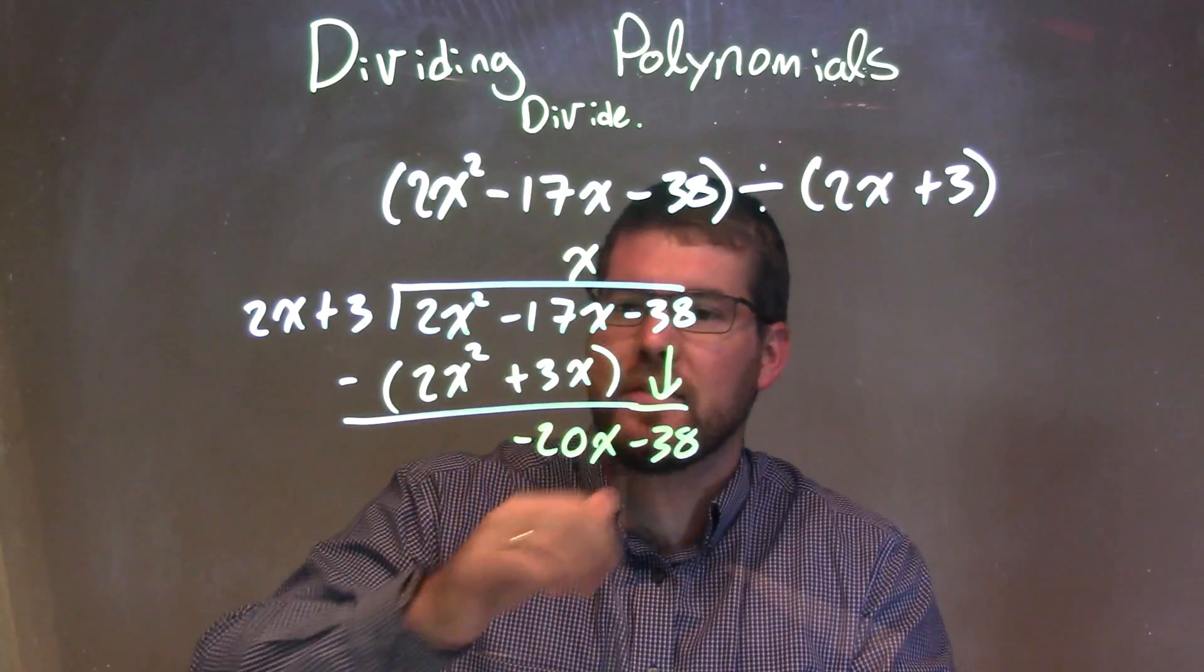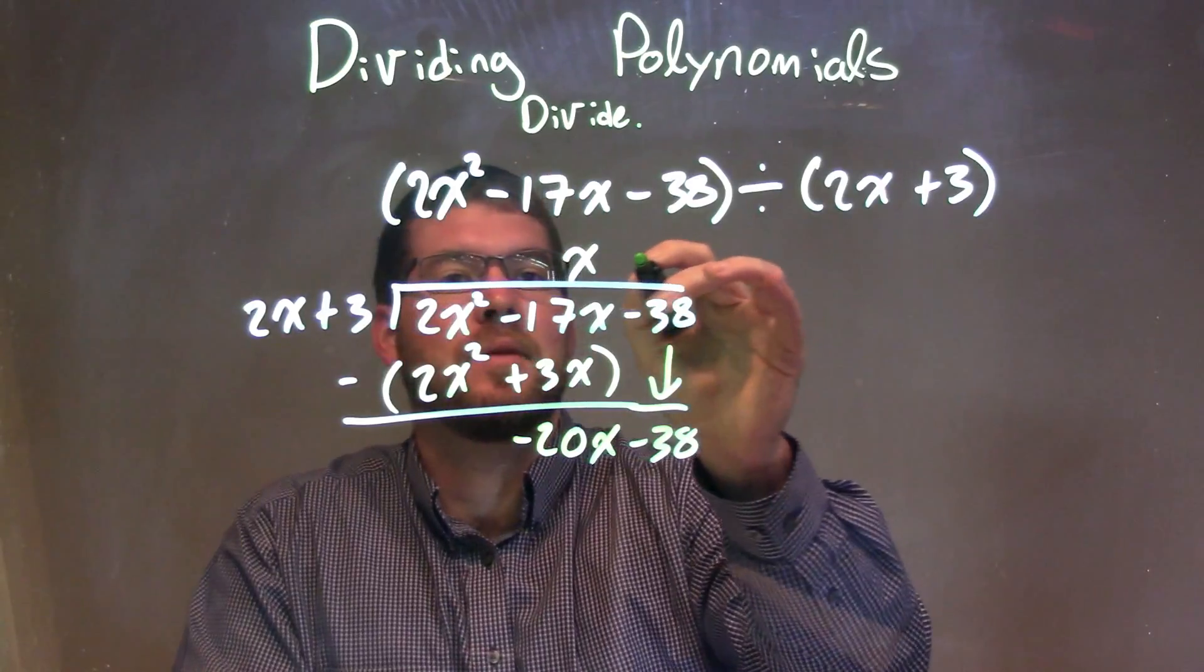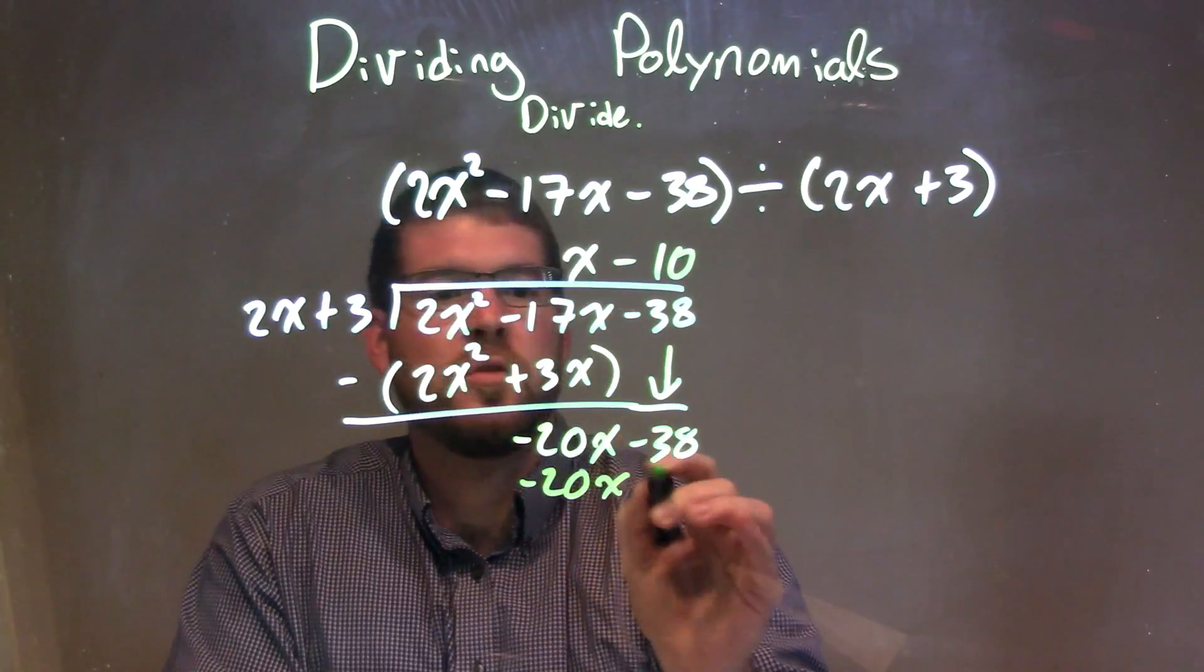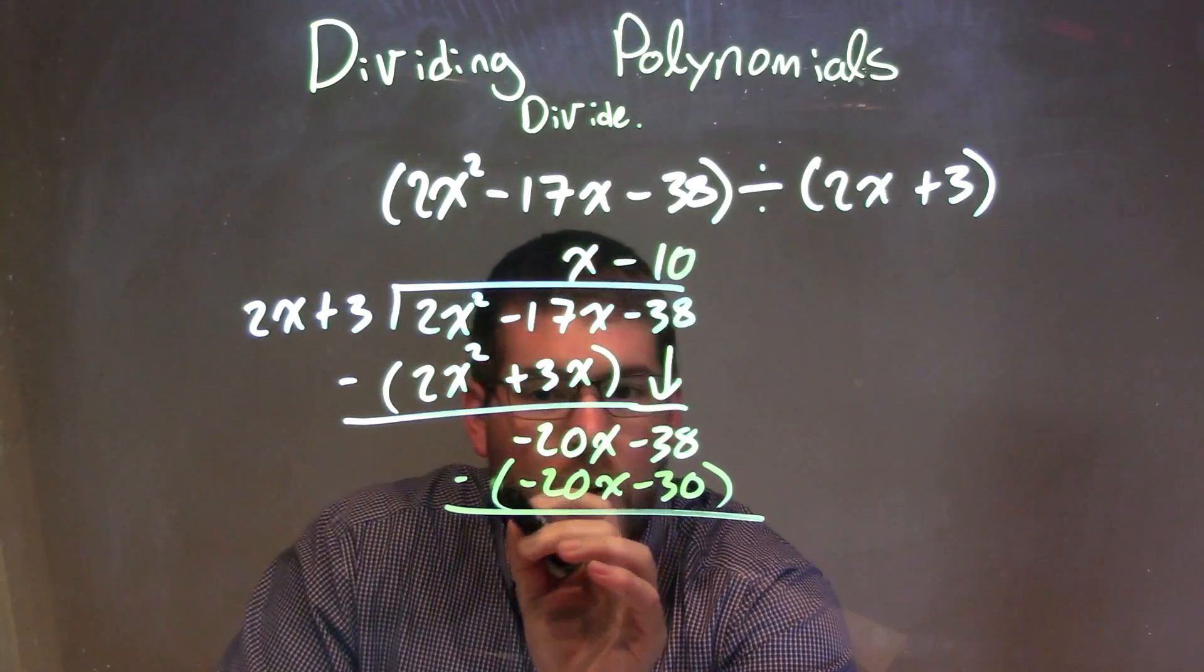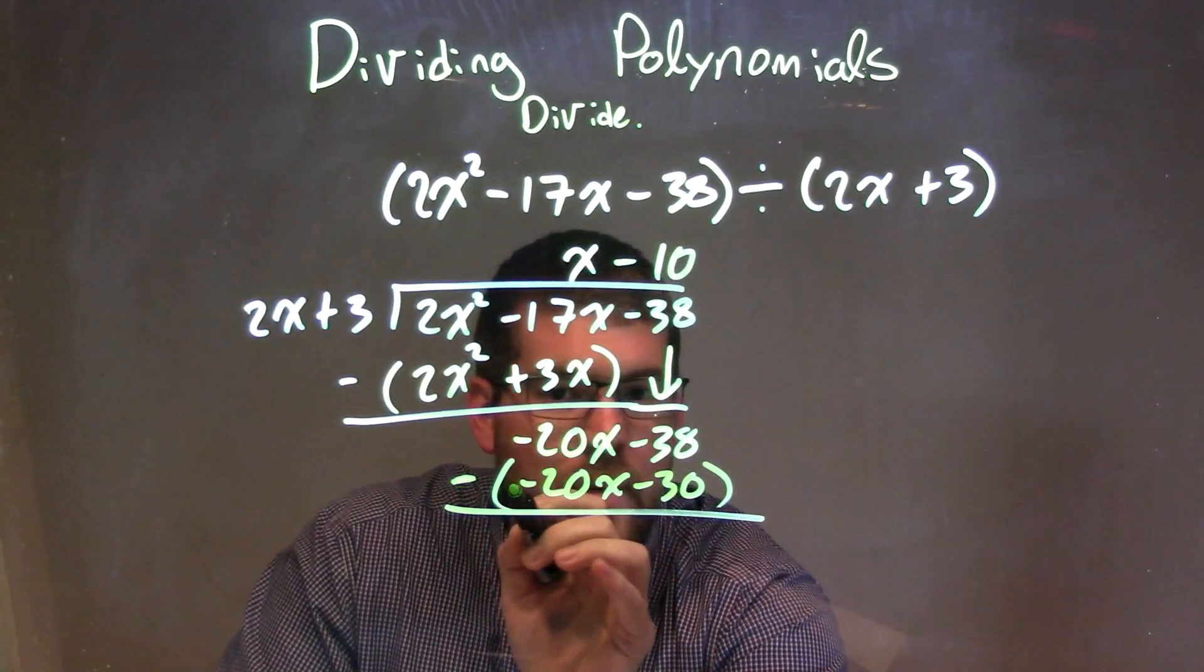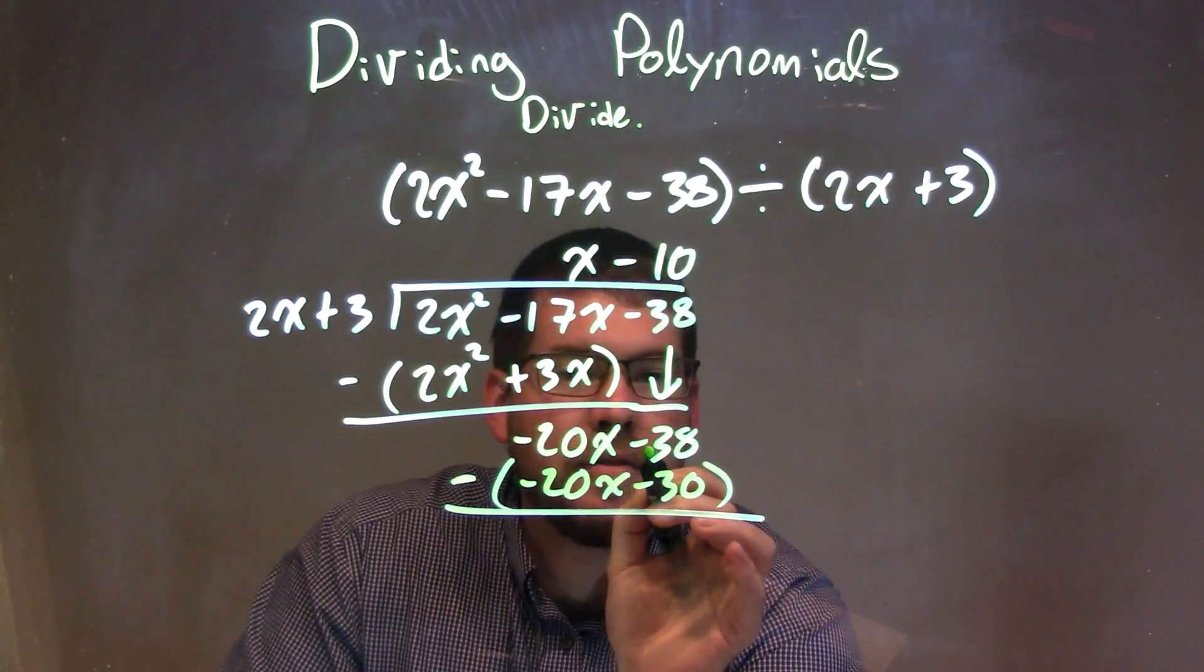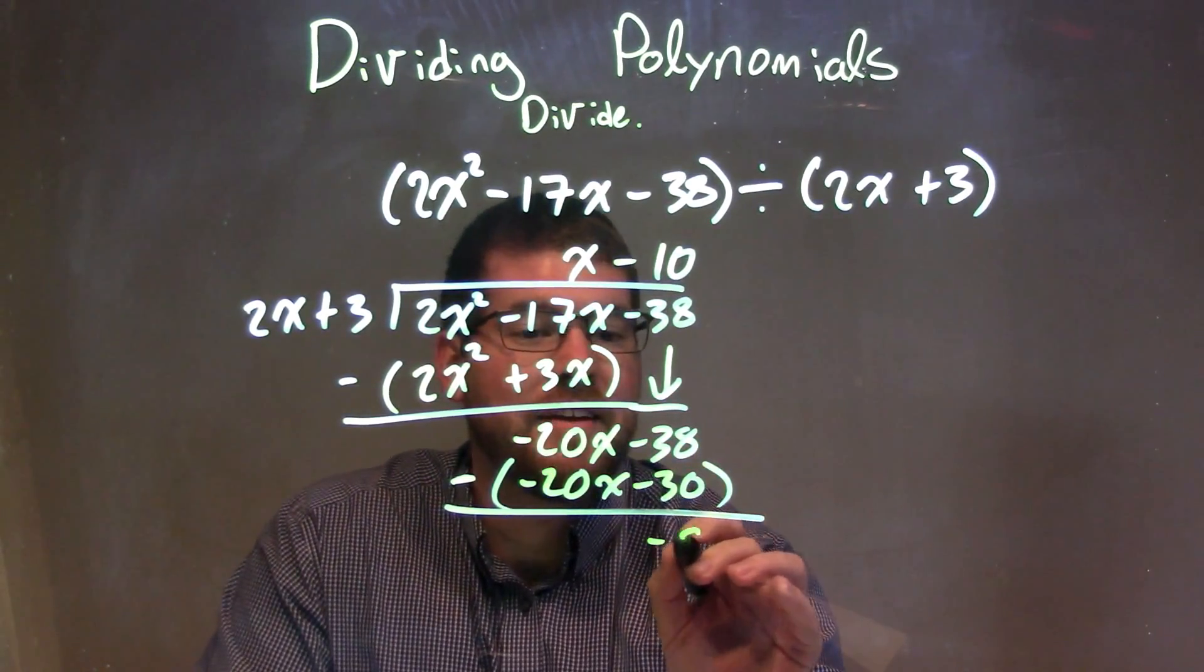Now we ask the same question: what times 2x is negative 20x? That's negative 10. So negative 10 times 2x is negative 20x, and negative 10 times 3 is negative 30. Now I'm going to subtract, making sure to put parentheses around it and distribute that minus sign. Negative 20x minus negative 20x is 0, and negative 38 minus negative 30 is negative 8.